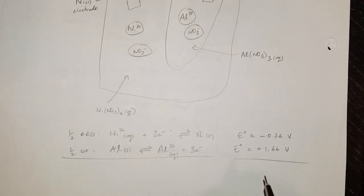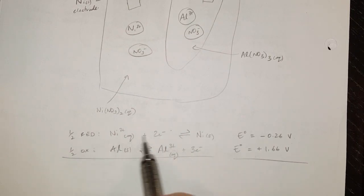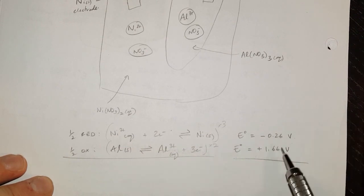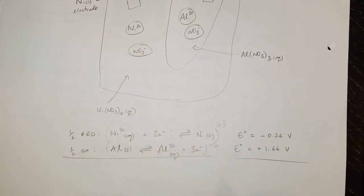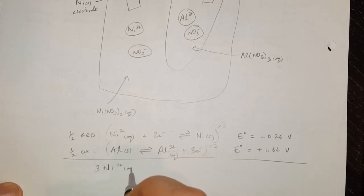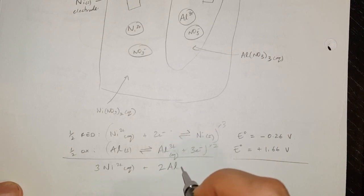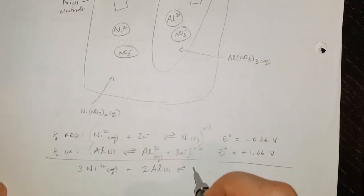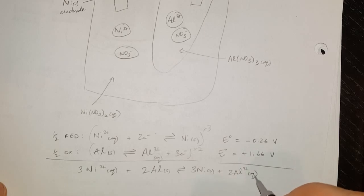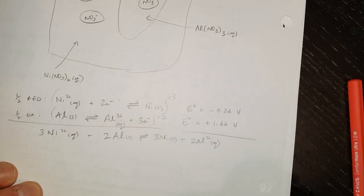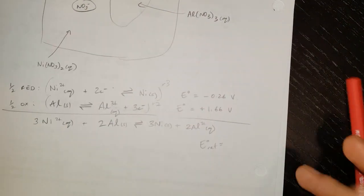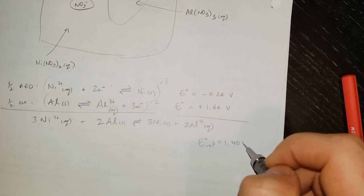Now I have to add these up. This reaction has two electrons and that one has three electrons, so I'm going to multiply the nickel half-reaction by three and the aluminum half-reaction by two. Recall that the voltages don't change — just the number of electrons changes, which means the current will change but not the voltage. So the overall reaction is: three Ni²⁺(aq) plus two Al(s) → three Ni(s) plus two Al³⁺(aq). When I add the voltages together, I get 1.40 volts, which is positive and therefore spontaneous — which is what we want in an electrochemical cell to produce electron flow spontaneously.